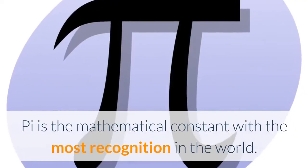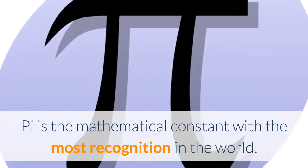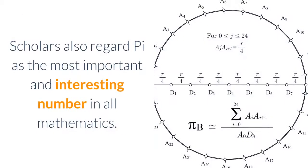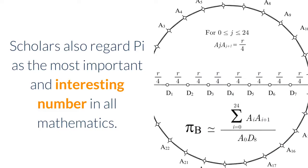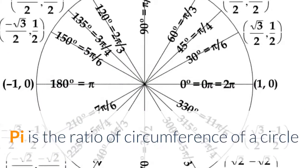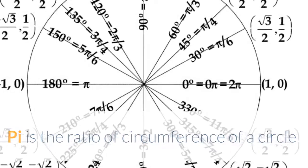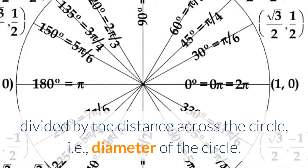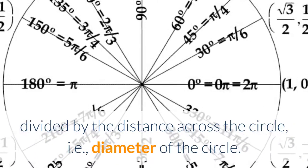Pi is the mathematical constant with the most recognition in the world. Scholars also regard Pi as the most important and interesting number in all mathematics. Pi is the ratio of circumference of a circle divided by the distance across the circle, i.e., diameter of the circle.